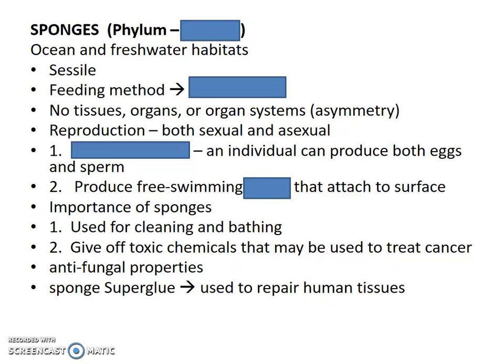The first animal phyla we're going to talk about is Phylum Porifera, and this does include all of your sponges. The sponges are kind of a weird group because in their adult stage they are sessile, meaning non-moving, fixed in one spot. But in their larval stage, they do satisfy that rule of being an animal in that they do swim around — they are free swimming.